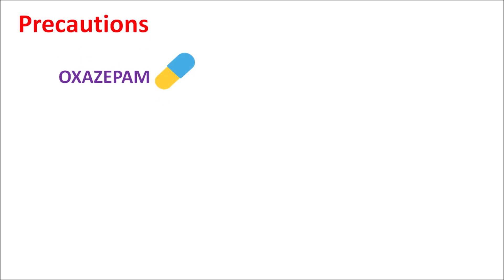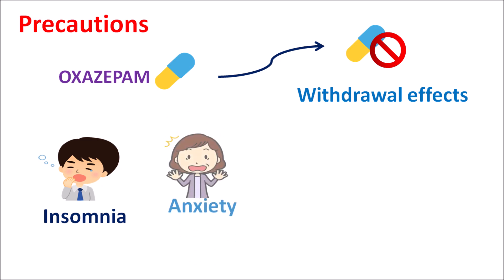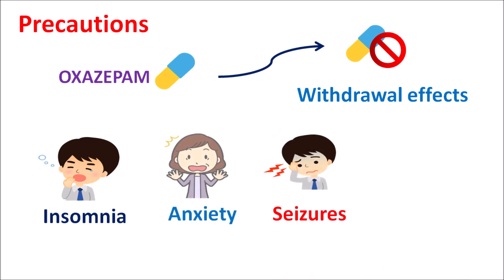One important precaution is that Oxegepom should not be withdrawn suddenly, because sudden withdrawal can produce withdrawal effects — which are quite opposite to the effects of Oxegepom and similar to symptoms of anxiety disorder. On sudden withdrawal, insomnia increases, anxiety increases, seizure tendency increases, and tension and irritability increase. Sudden withdrawal can also produce muscle pains. To avoid these effects, use of Oxegepom should not be suddenly stopped; particularly at high doses, the dose should be slowly reduced.